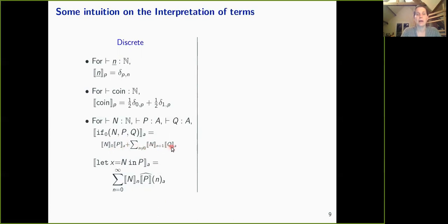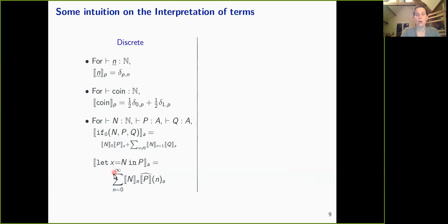To interpret the conditional, I first sample n. If its outcome is 0, with probability n[0], I compute p; otherwise I compute q. So I multiply the interpretation of n at 0 by the interpretation of p, and sum over all possible outcomes. For the let operator—which samples n, stores the outcome into x, and passes it to p—to compute the probability of getting a, I sum over all possible outcomes of n and multiply the probability that n yields outcome n̂ with the semantics of p where x is substituted by n̂.